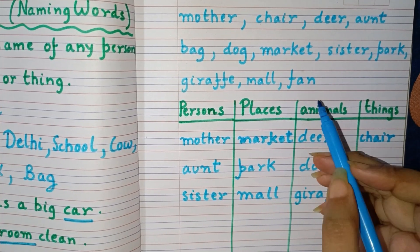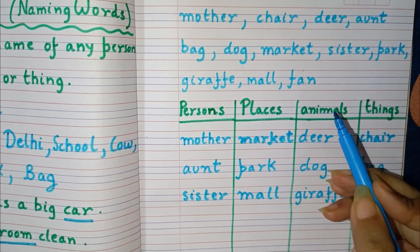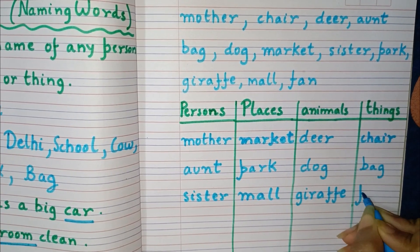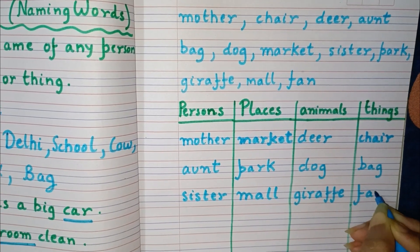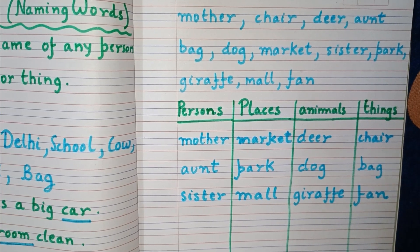Now, the last is fan. Fan is a thing, so we will put it in the things column — F-A-N, fan.